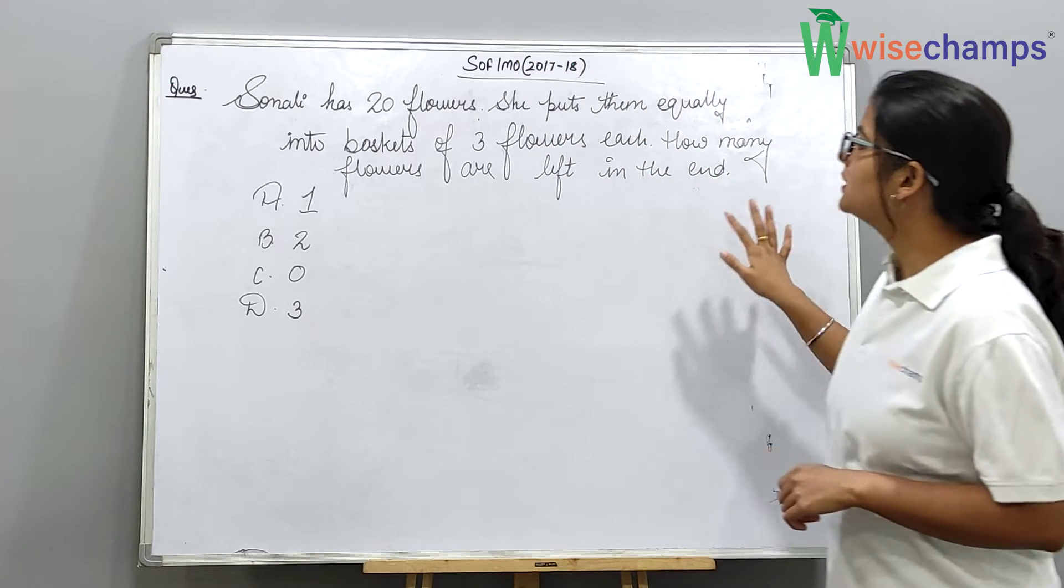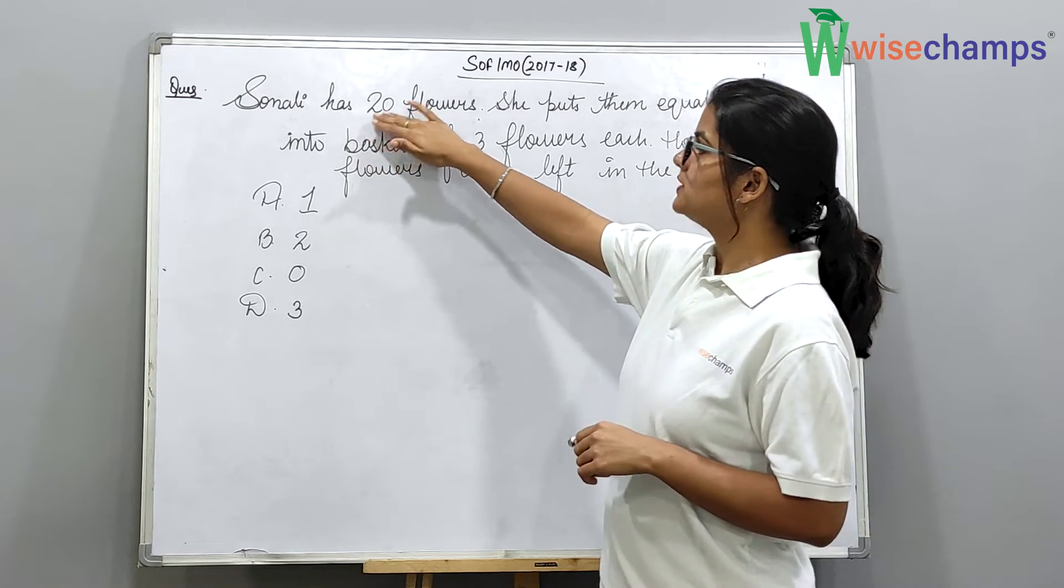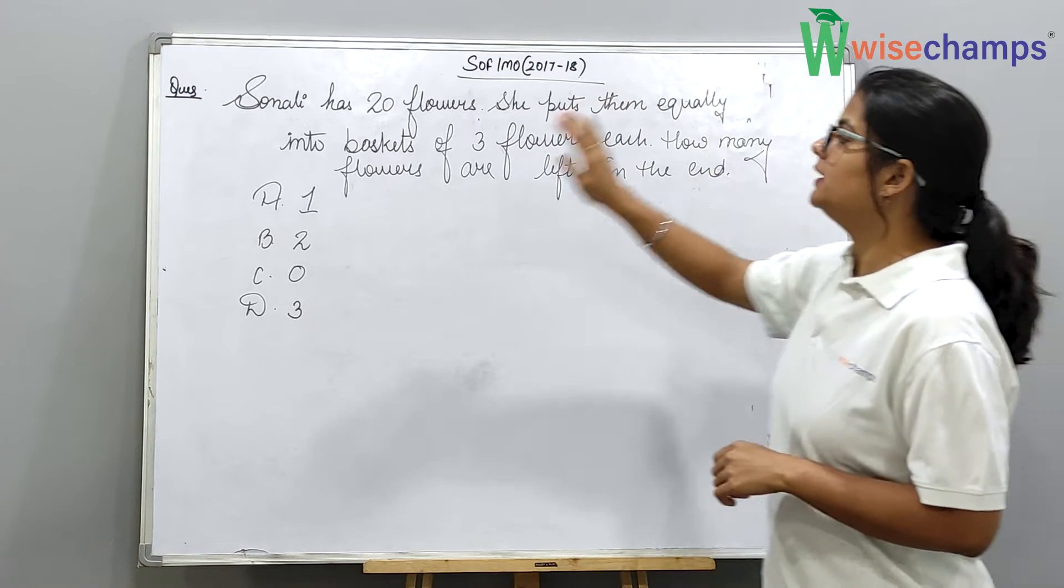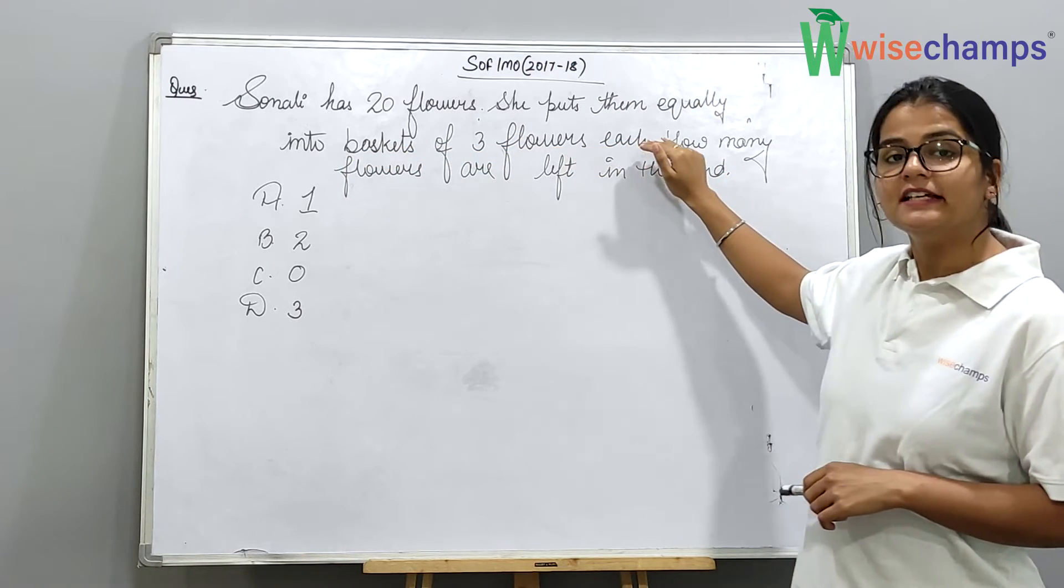The question is, Sonali has 20 flowers. She puts them equally into baskets of 3 flowers each.